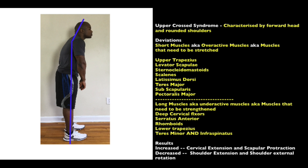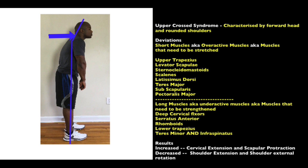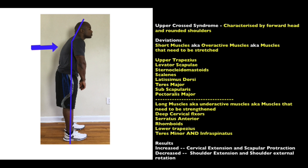The third deviation is upper cross syndrome, characterized by a forward head and rounded shoulders. The overactive muscles that need stretching are the upper trapezius, levator scapula, sternocleidomastoid — which helps us inhale, as covered in the cardiorespiratory chapter — the scalenes (which always come with the sternocleidomastoid), the latissimus dorsi, teres major, subscapularis, and pectoralis major. These are the overactive muscles pulling the person forward.